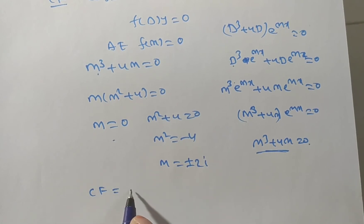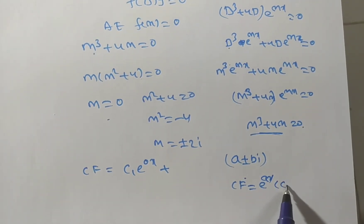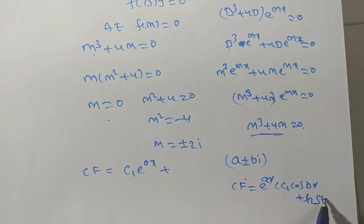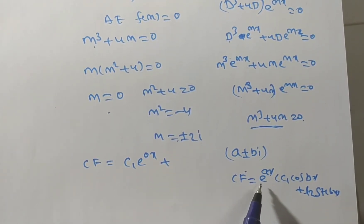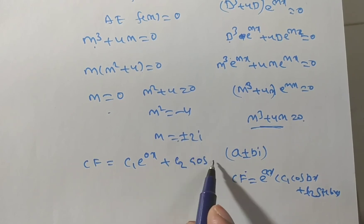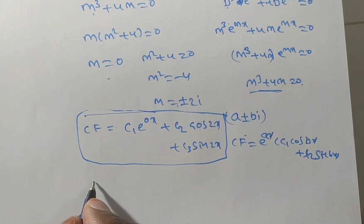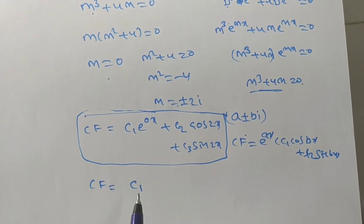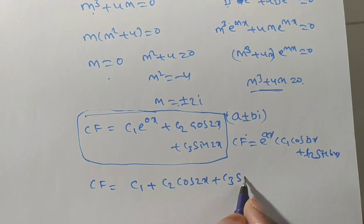For the real root m = 0, we get c₁·e^(0x). For complex roots of the form a ± bi, the CF is e^(ax)·(c₁cos(bx) + c₂sin(bx)). Here a = 0, so e^(0x) = 1. Thus the complementary function is c₁ + c₂cos(2x) + c₃sin(2x).